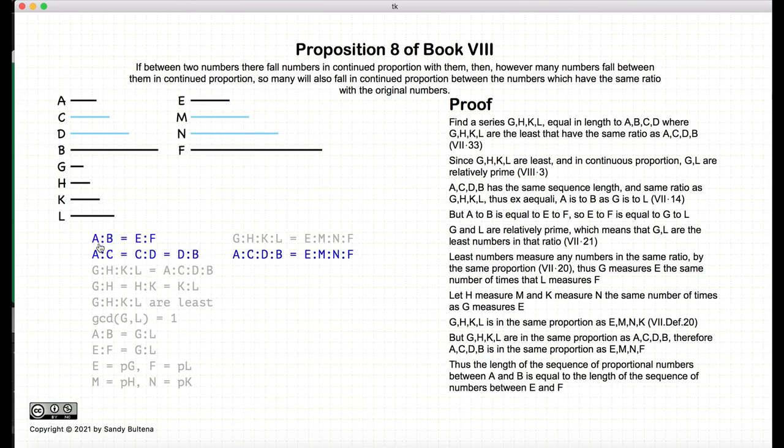So if we have two numbers, a and b, that have a set of numbers making a series of proportional numbers, and if a to b is equal to e to f, we can construct another series from e to f of the same number of numbers that are in proportion. And that is what we were trying to prove.